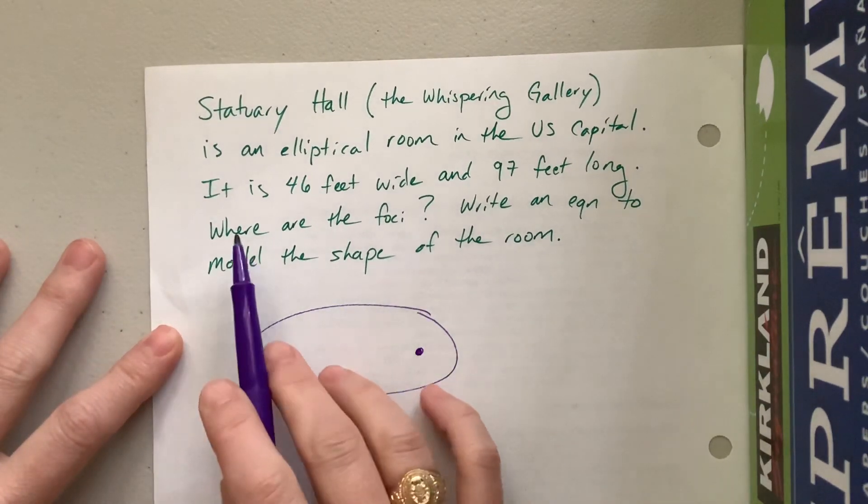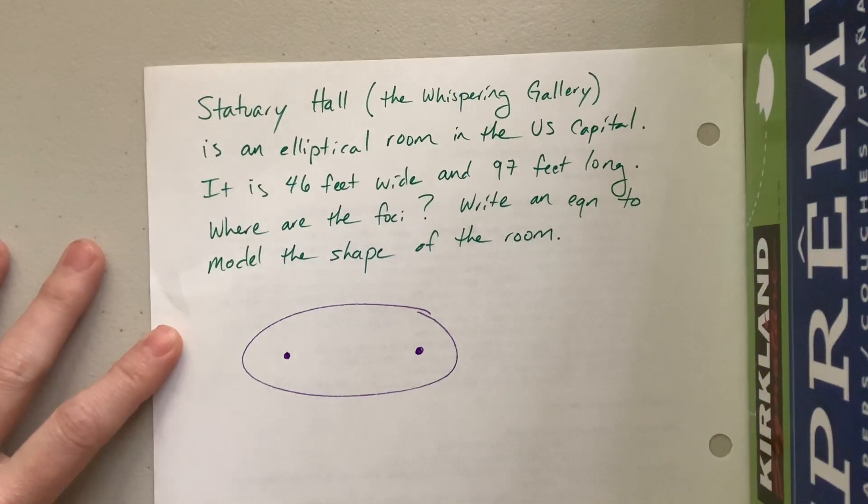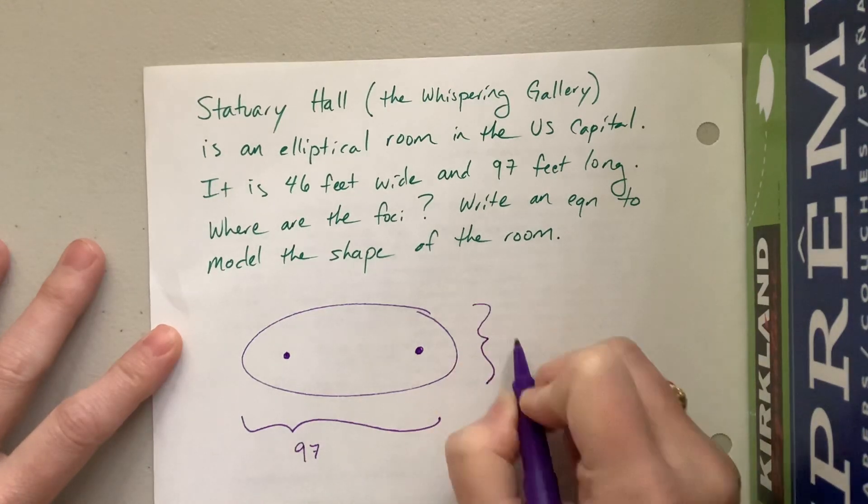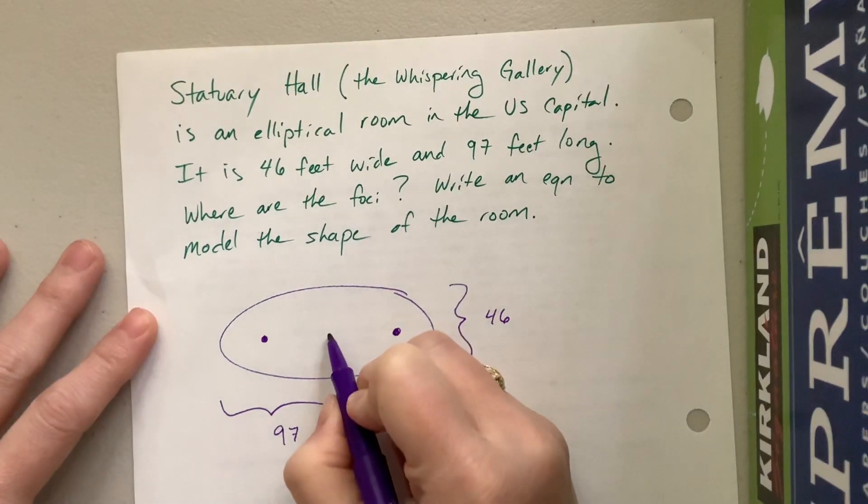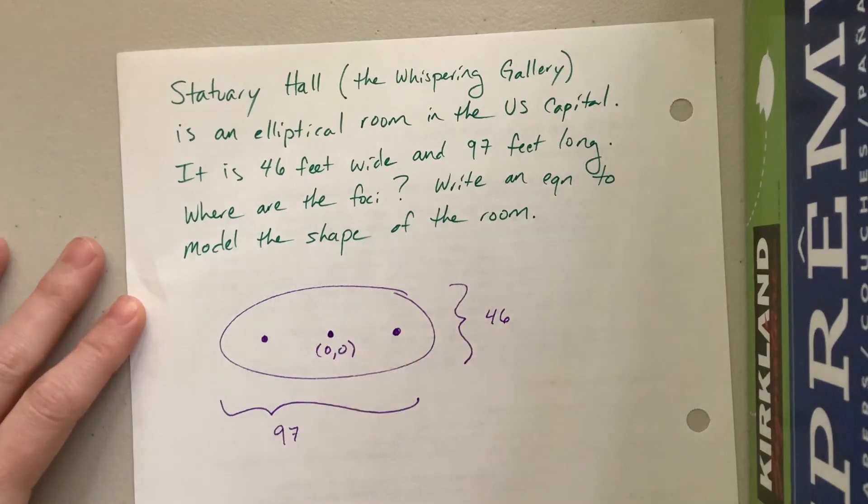So in this particular situation they tell us that it's 46 feet wide and 97 feet long. They want to know where the foci are and then they want us to write an equation of the shape of the room. Okay, so if this whole thing is 97 feet long and this whole thing is 46 feet wide, let's say that the center is at the origin, zero, zero. We could put it anywhere we want, but why complicate our lives if we don't have to.